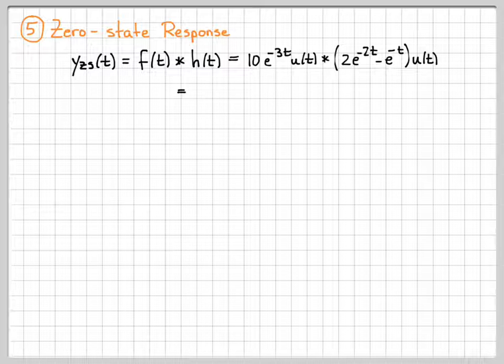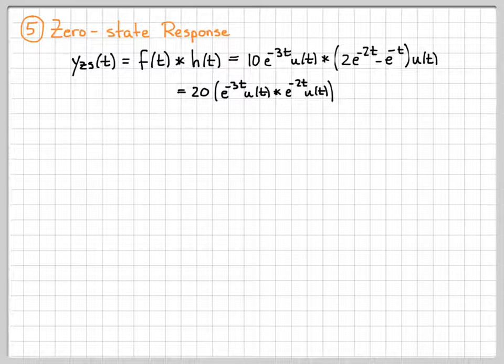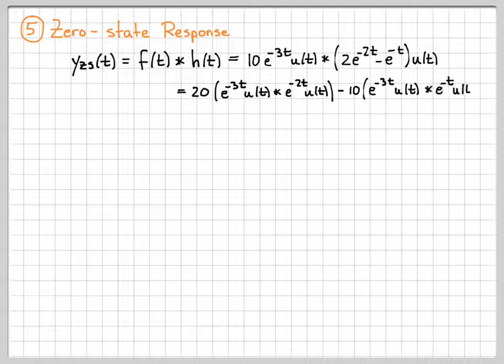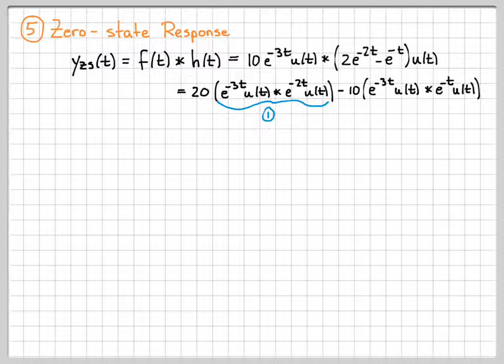So I'm going to go ahead and distribute the convolution. If I do that, I end up with 20 times this bracketed term. So I have to do e to the negative 3t u of t convolved with this minus 10 times this bracketed term right here. So I really have two convolutions I need to do because this one signal was getting convolved with a difference of signals. So once you distribute it, you end up with these two different pieces.